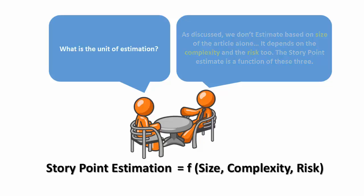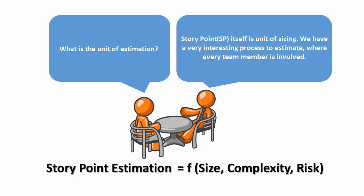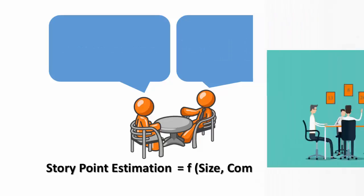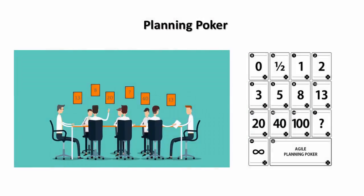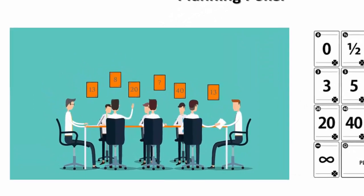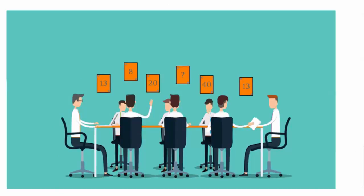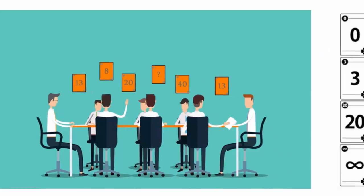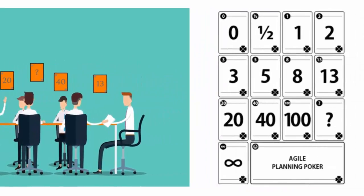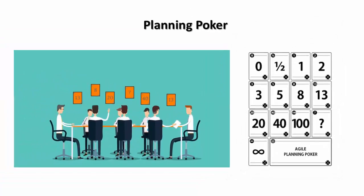What is the unit of estimation? Story point itself is a unit of sizing. We have a very interesting process to estimate where every team member is involved. Why are all team members required for estimation — won't it take more time? One person's estimate may not fit for all. An estimate is a guess, and when a cross-functional team guesses together, accuracy is much better. Discussion before the estimate helps us not miss any aspect.